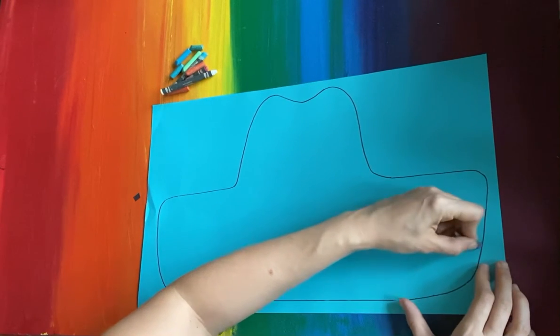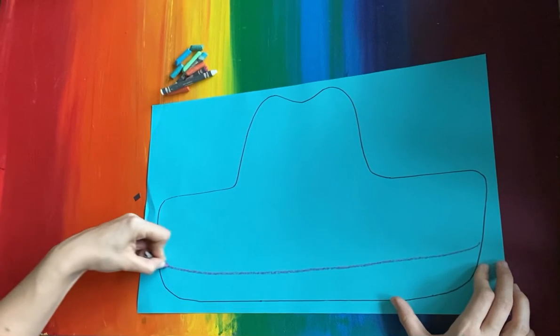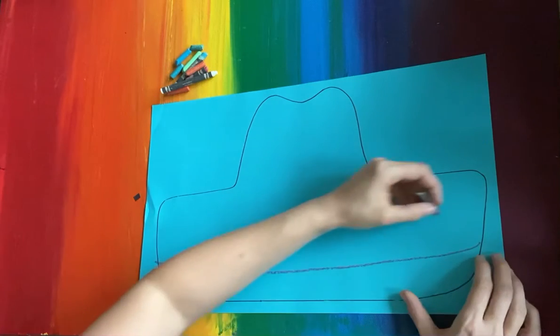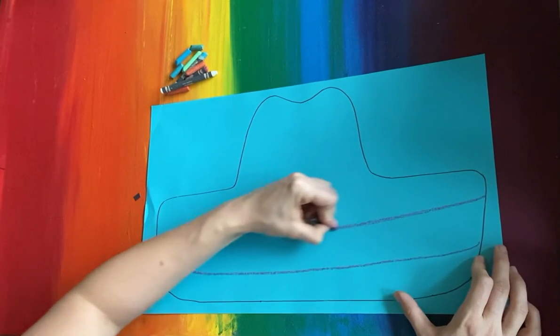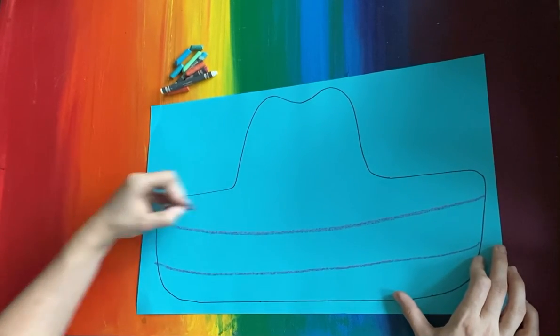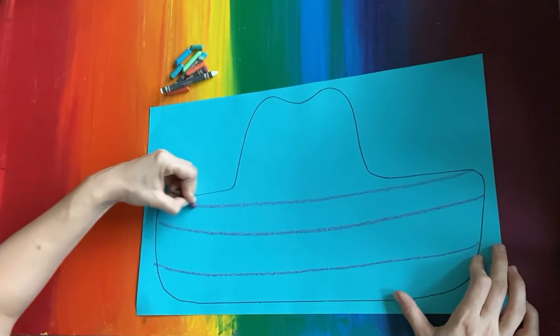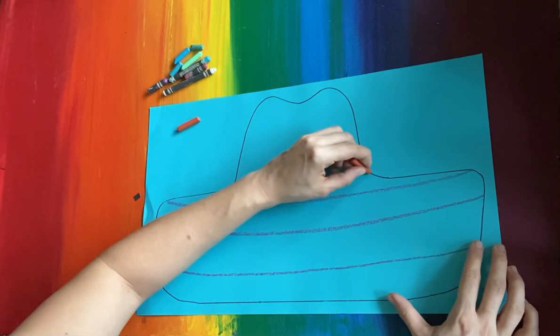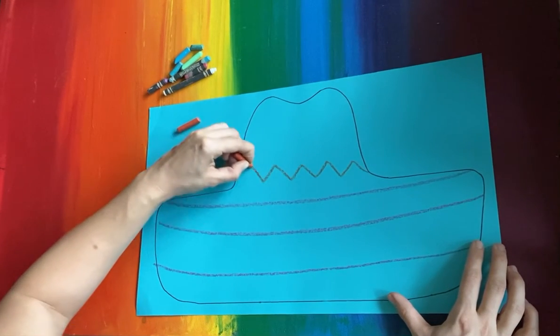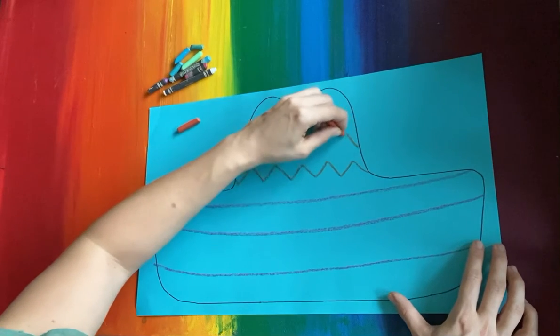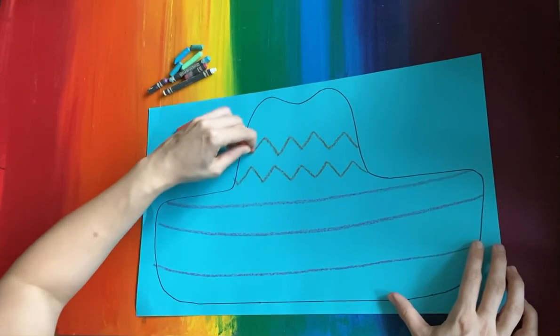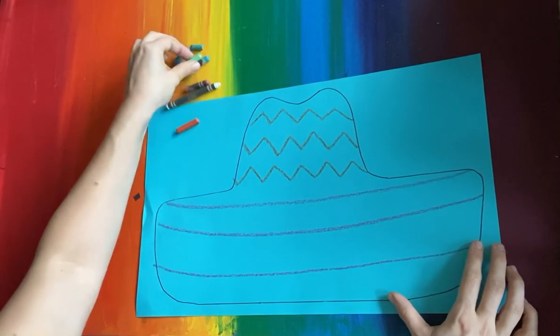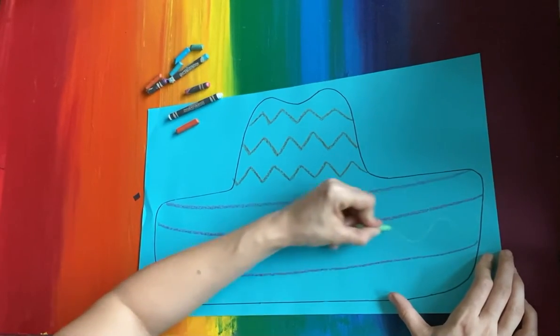We've got straight lines. These crayons are special because they show up on construction paper. We've got zigzag lines and we've got wavy lines.